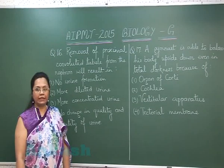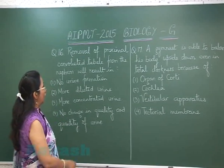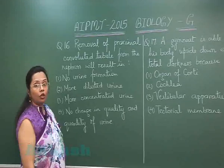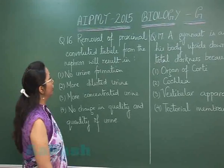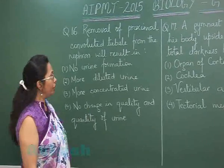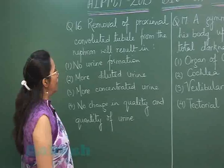Question number 16: If the proximal convoluted tubule is removed from the nephron, what would be the result?